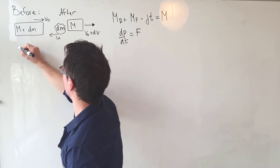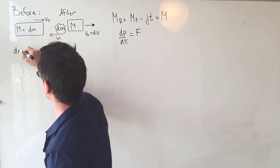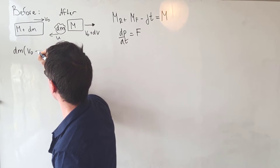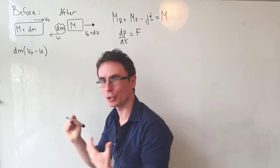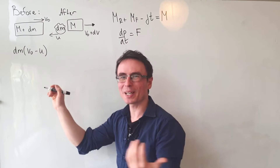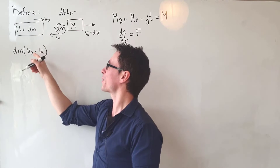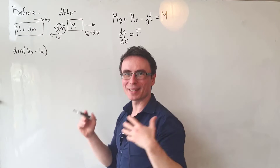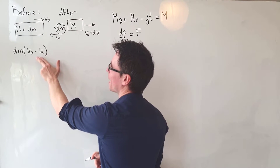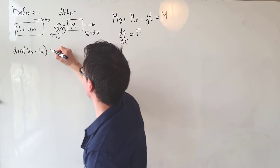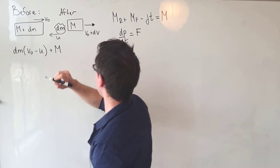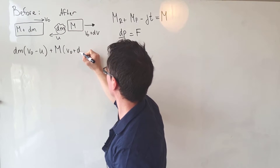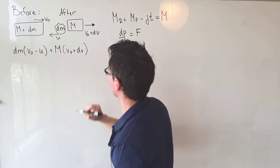Let's find the change in momentum by considering the final momentum minus the initial momentum. The momentum afterwards is given by the mass dm moving at a speed v₀ - u with respect to a stationary observer, because the fuel dm was initially moving at v₀ but is now moving at -u with respect to the rocket. To that we add m multiplied by (v₀ + dv).